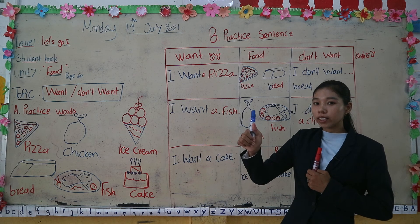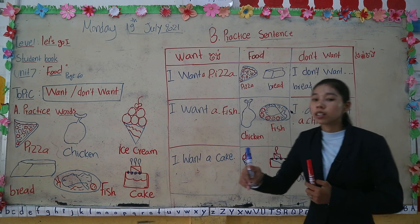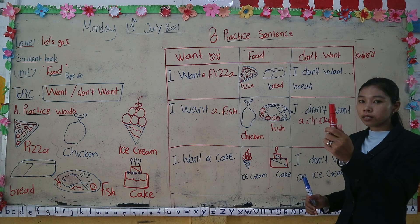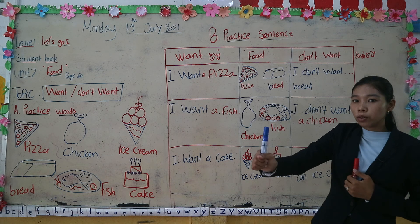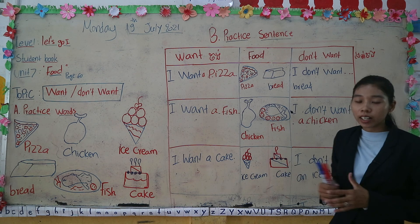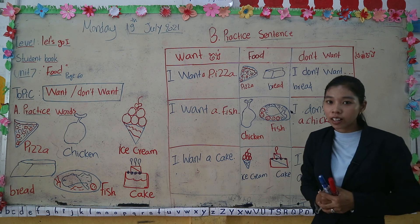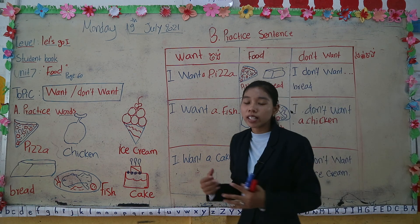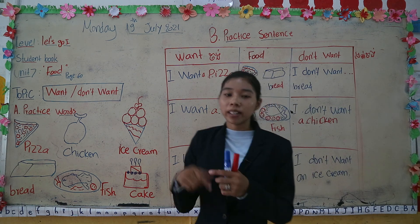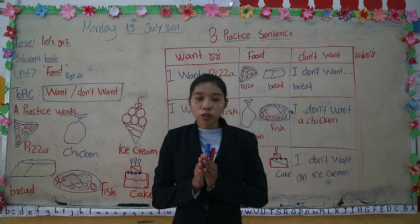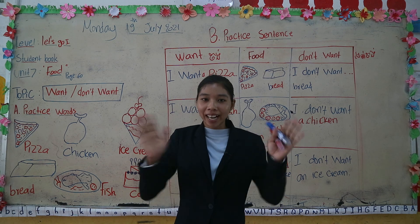So — I want red marker, and I don't want blue marker. Okay, clear about the word 'want' and 'don't want'? If you have any questions, you can comment here. Thank you for watching my video — bye bye!